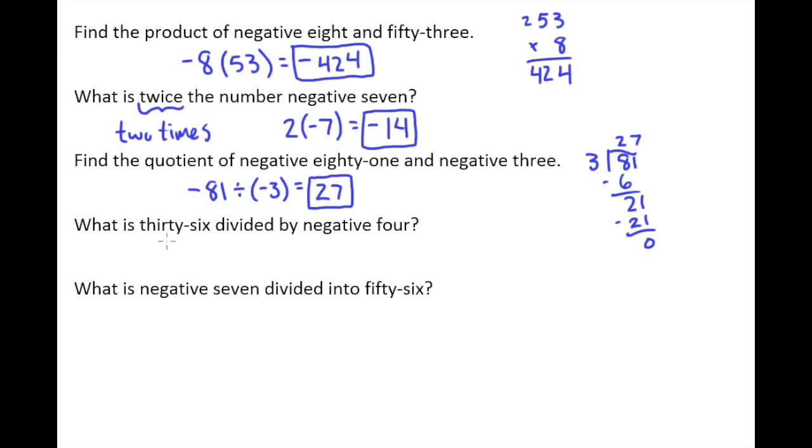The next one says what is 36 divided by negative 4? So here we just take it right in order, 36 divided by negative 4. It's a positive divided by negative, so I know the answer is negative. 36 divided by 4 is 9, so our answer is negative 9.